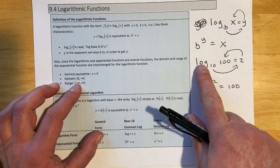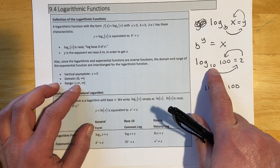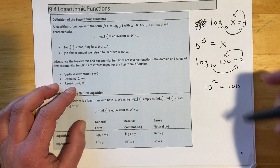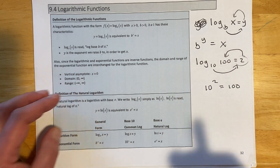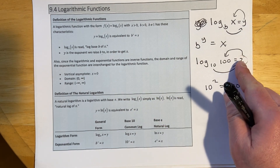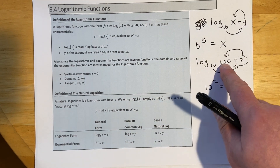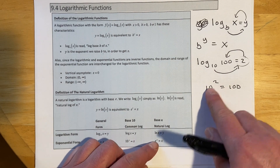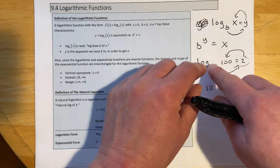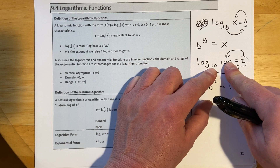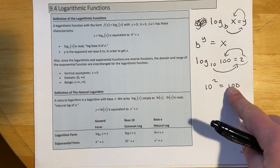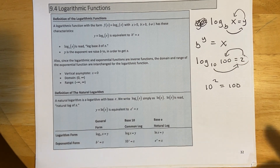What this is asking is: what power do I need to raise this base to in order to get 100? The answer is 2. What logs do is find exponents. We're used to knowing the exponent and finding the result — 10 squared makes 100 — but now we're asking what do I raise 10 to to get 100. That's what a log does.